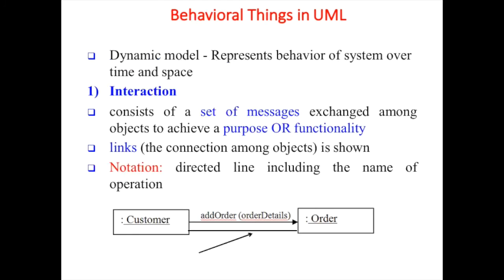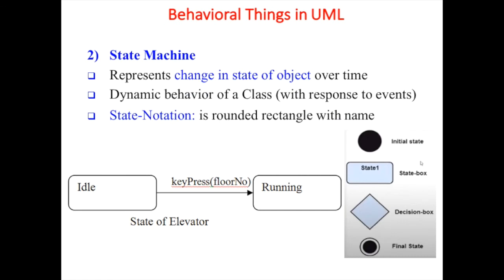Next is the dynamic model, which represents the behavior of a system over time and space - it changes with time and location, while the static model remains static. Interaction consists of a set of messages exchanged among objects to achieve a purpose or functionality. The links - connections among objects - are shown, and the notation is a directed line including the name of the operation. For example, a customer can add an order or cancel an order.